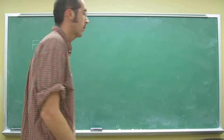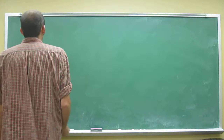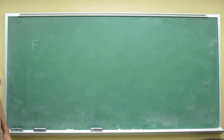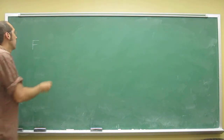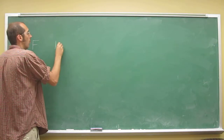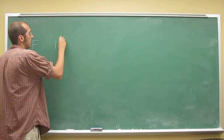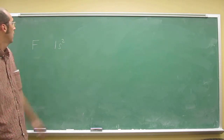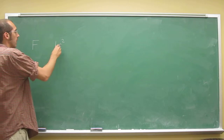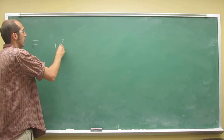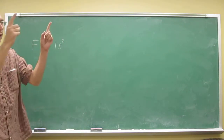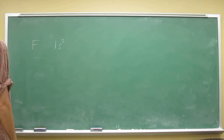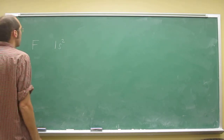Bennett asked: what's the electron configuration? So he just used the periodic table, just like what we went over. So 1s2, because that's how many electrons can fill up an s orbital. If you look at the periodic table, there are only two electrons in that first energy level.